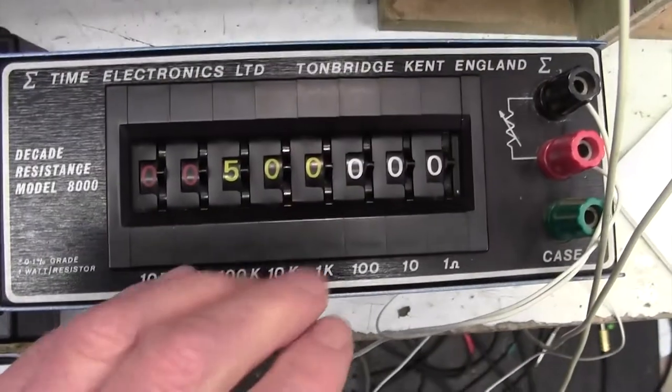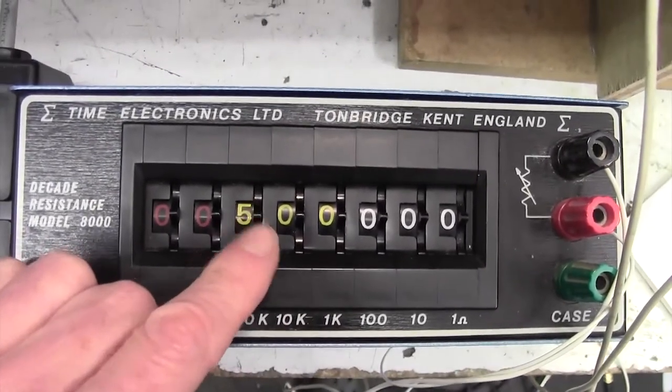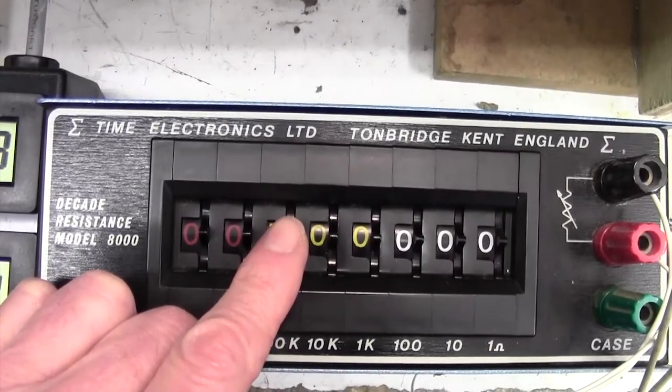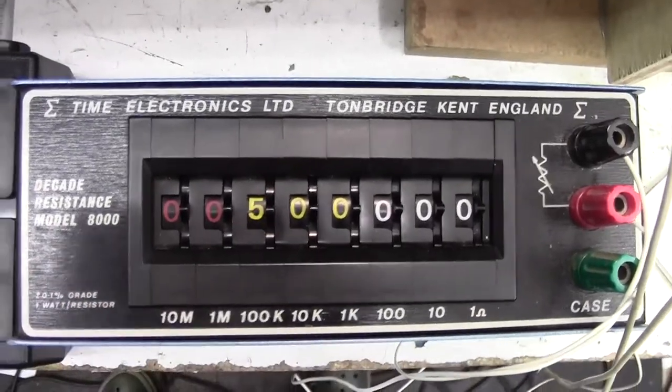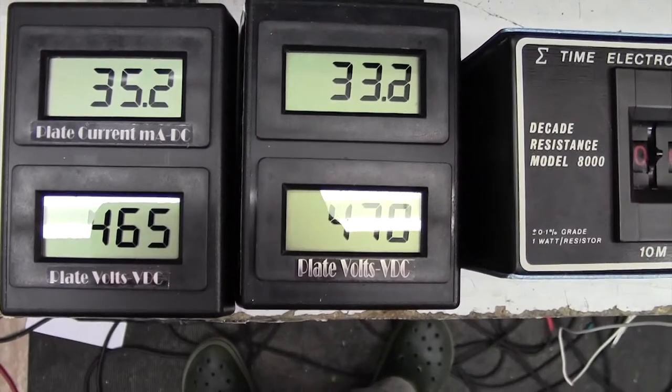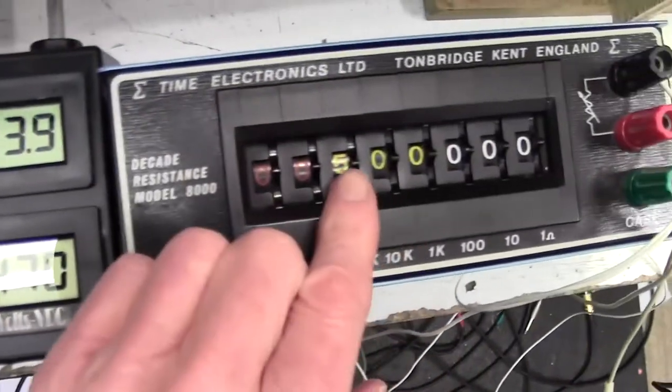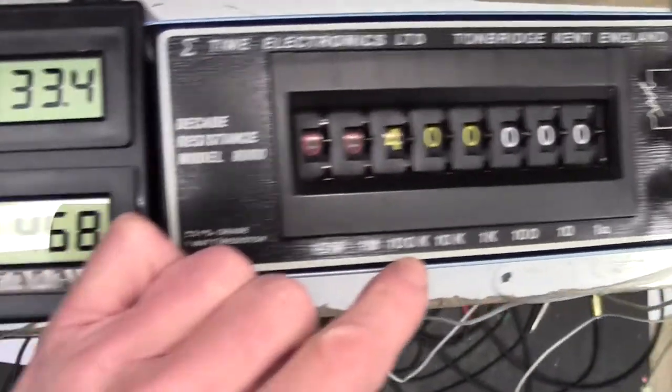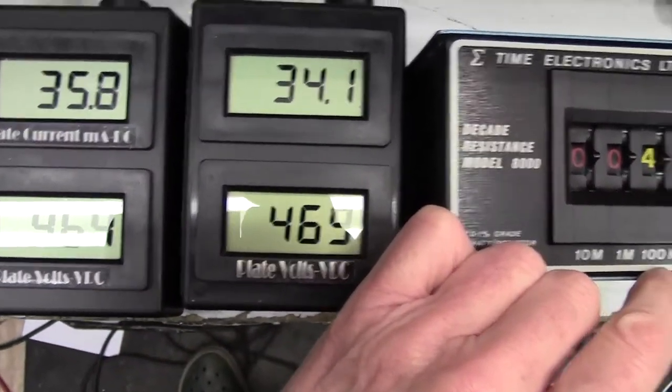They're going to the resistance decade box. At the moment I've got 500k, which is a very high resistor in parallel across that R155, so that shouldn't have that much effect, and indeed it doesn't. We're up to 35 and 33. So now I'm going to just reduce this down to 400k. See what that does.